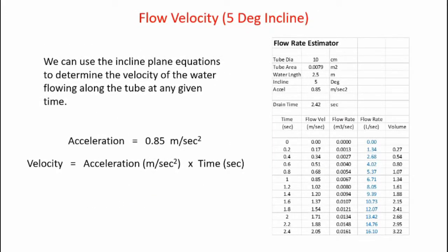I can incorporate the inclined plane equations and create a spreadsheet to help me perform the analysis. Here's my spreadsheet. I have a tube diameter of 10 centimeters, a water column length of 2.5 meters, and a tube incline of 5 degrees. The spreadsheet calculates the acceleration along the tube, 0.85 meters per second squared, the same value I calculated earlier. The spreadsheet also calculates the drain time of 2.42 seconds, again the value I calculated earlier. The beauty of the spreadsheet is I can calculate the flow velocities and flow rates as a function of time between 0 and 2.4 seconds, which is the drain time of the tube. I can easily go in here and change these parameters and look at all kinds of different configurations.